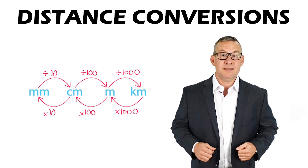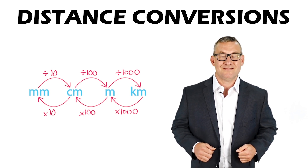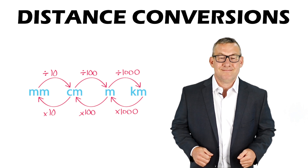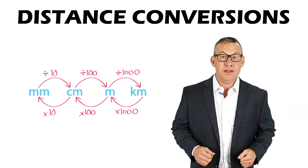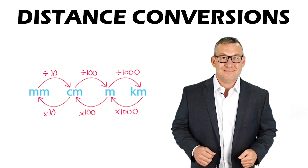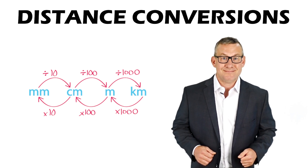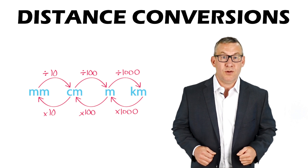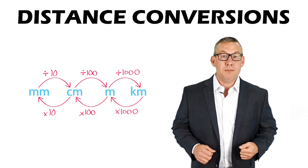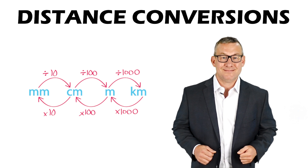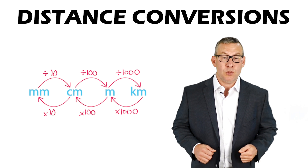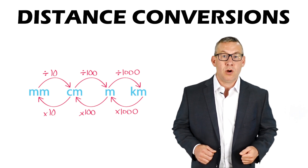A GISP should know basic distance and angle measurements and conversions. A U.S. survey foot equals 0.304800609 meters. An international foot equals 0.3048 meters. It is important to know that the U.S. survey foot is longer than the international foot. One mile equals 5,280 feet or 1.6 kilometers. One kilometer equals 0.62 miles or 1,000 meters.